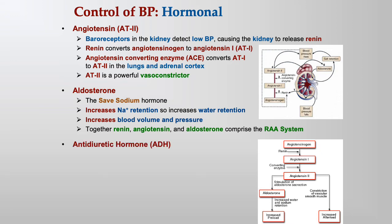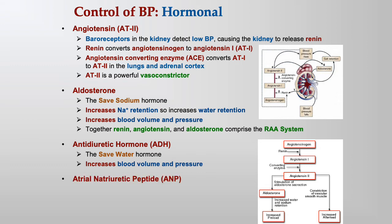Angiotensin-2 also increases release of antidiuretic hormone (ADH) from the posterior pituitary. ADH is the 'save water' hormone — antidiuretic means you don't pee. The kidney takes water that it would normally put into urine and retains it in the blood, increasing blood volume and stroke volume, and therefore raising mean arterial pressure.